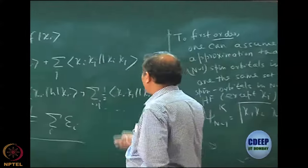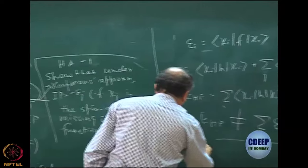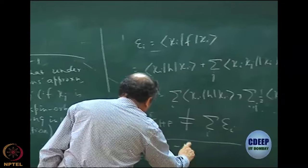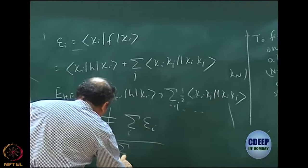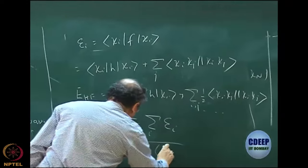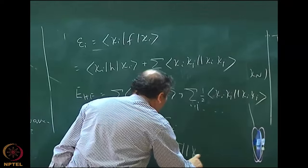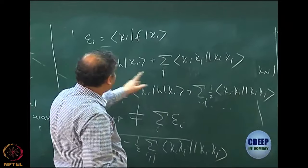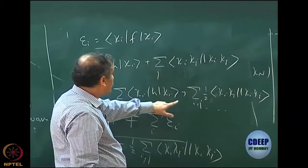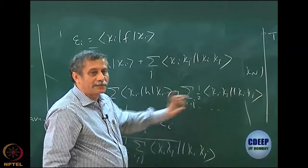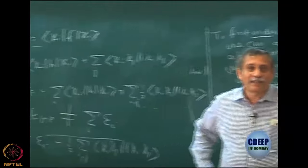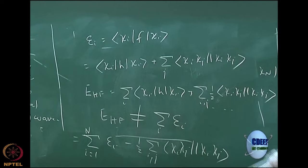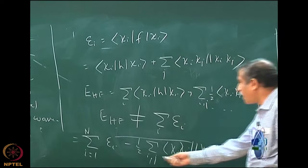You can very easily show what the Hartree-Fock energy actually is. It is the sum of the orbital energies minus something. If I have an N-electron system, it is the sum minus one half of the sum over i and j of chi_i chi_j. That is trivial to show because if I take all the sum of the orbital energies, the half factor will go, so I have to subtract half of these to get back the correct half. These are trivial mathematics.